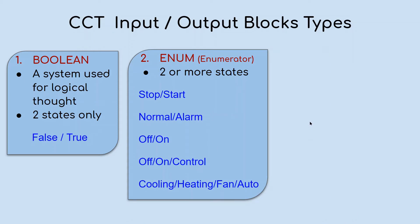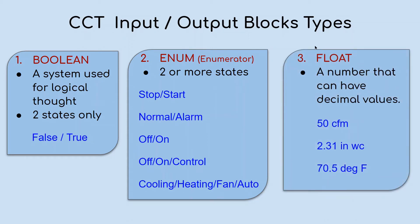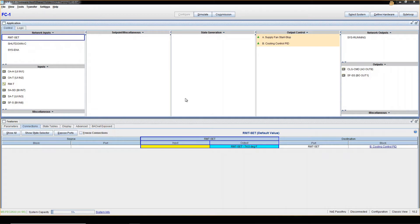The second type of inputs or outputs is Enum, short for Enumerator, and this means two or more states. An input can have either off/on, normal/alarm, or more than one state — for example: off, on, control, cooling, heating, fan, auto. The last type is Float, which is different from Enum and Boolean as they are numbers — numbers that can have a decimal value, can be whole numbers, or negative numbers.